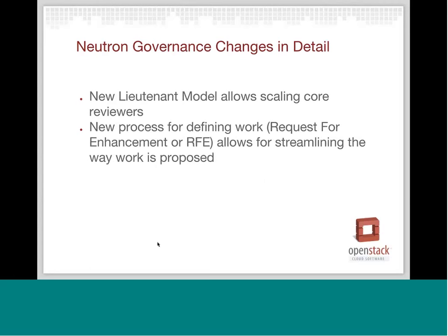Some other governance changes we had: one thing we wanted to do was continue trying to scale core reviewers inside Neutron. One of the problems we've had is that Neutron is a fairly large project that encompasses a lot of different things, and it's incredibly hard for people to grasp all the different pieces in any level of detail. We ended up with a lot of people who are specialists in certain areas. So we changed the model and have this new lieutenant model, which will hopefully allow us to scale core reviewers. We still have the PTL — which is myself — and then we have seven lieutenants for different areas like the reference implementation, API and database, testing, and other areas. We've allowed the lieutenant to propose new core reviewers for their area, and so far we've had four new core reviewers proposed in specific areas, and this is actually working out really well.